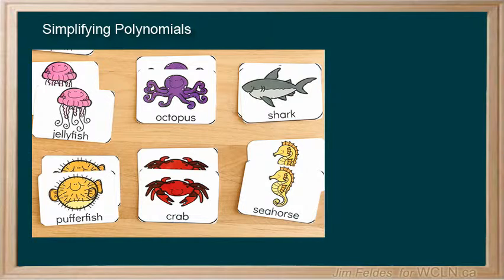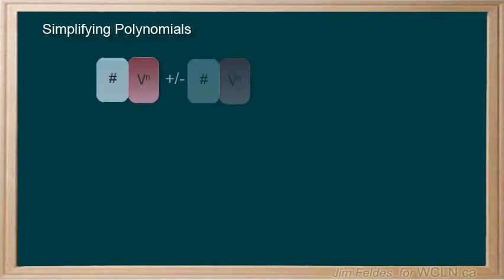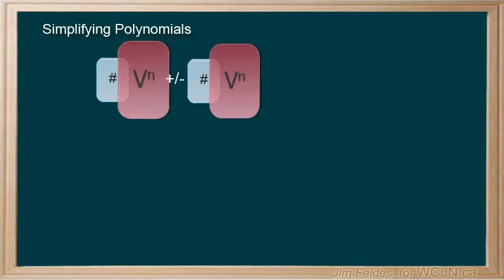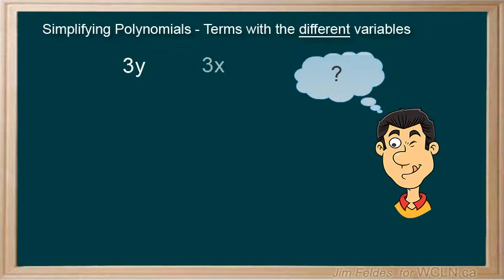Recognizing similar items is likely something you've been doing from an early age. Now we're just applying it to like terms in a math expression. Nothing really complex here but critical that the variable parts and the terms are identical. Hopefully you recognize right away that two terms with different variables like 3y and 3x certainly are not the same and cannot be simplified.